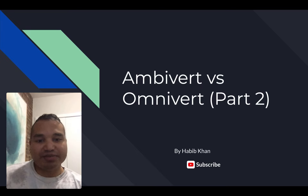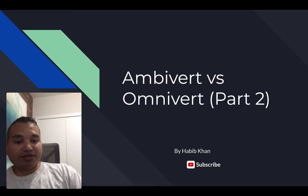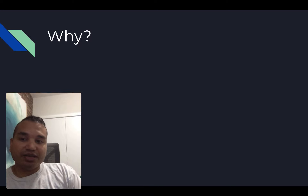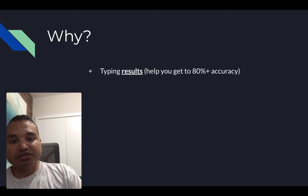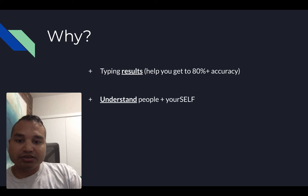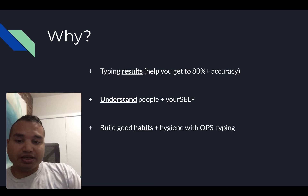Welcome to the ambivert versus omnivert coin, part two. If you haven't watched part one, click here to watch it. My name is Habib Khan. Why do we care about the ambivert versus omnivert coin in objective personality? It'll actually help you with your typing results — you want over 80% accuracy — and I've been able to achieve that, so I want to help everyone else get to that level.